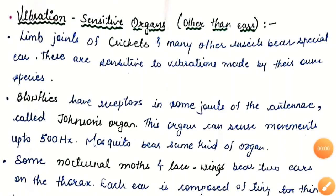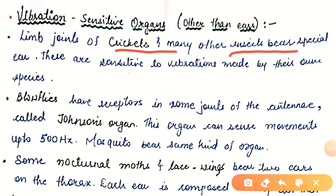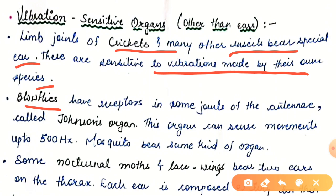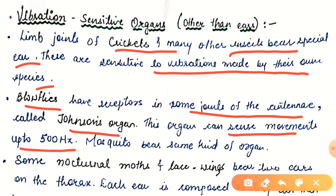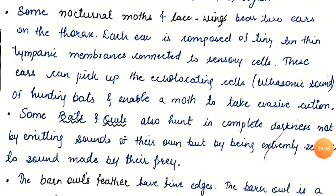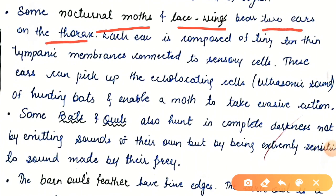Now we are seeing some vibration-sensitive organs other than ears. Limb joints of crickets and many other insects bear special ears that are sensitive to vibrations made by their own species — this is an intraspecific thing. Blow flies have receptors in some joints of the antennae called Johnston's organ, which can sense movements up to 500 Hz. Mosquitoes also bear the same kind of organ known as Johnston's organ.